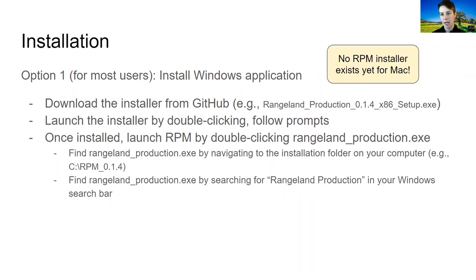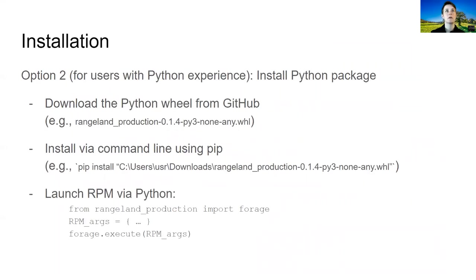Most users will want to install the rangeland production model using the setup executable, which installs just like any other program on your computer and will install an application called Rangeland Production. Unfortunately, we don't yet have a Mac installer. If there are any users with Python experience, we also have a Python package you can install from GitHub, but I will not be describing this use for the model as most people will simply use the installer.